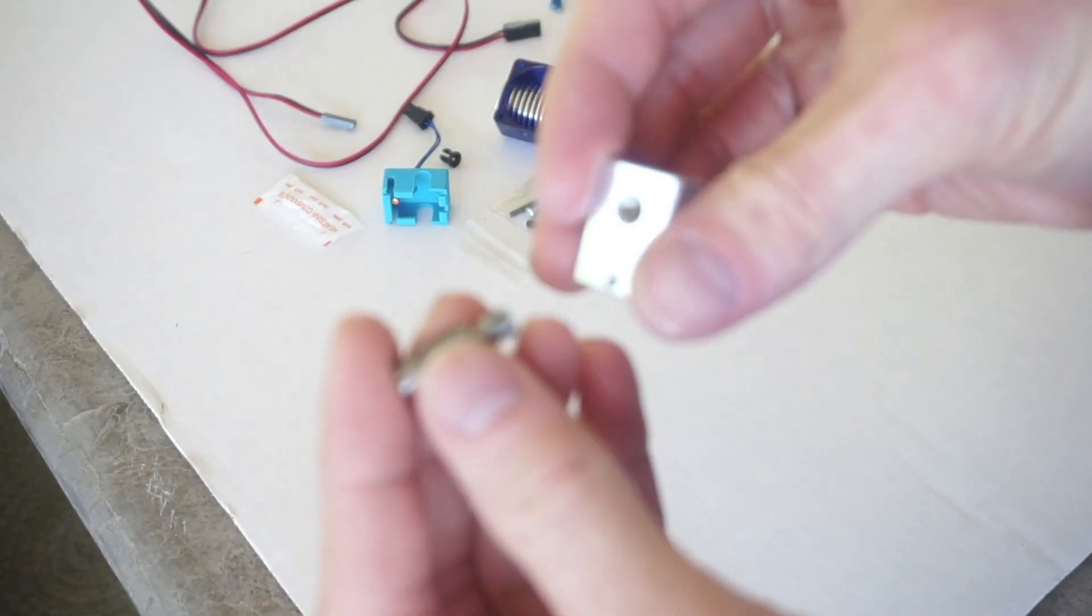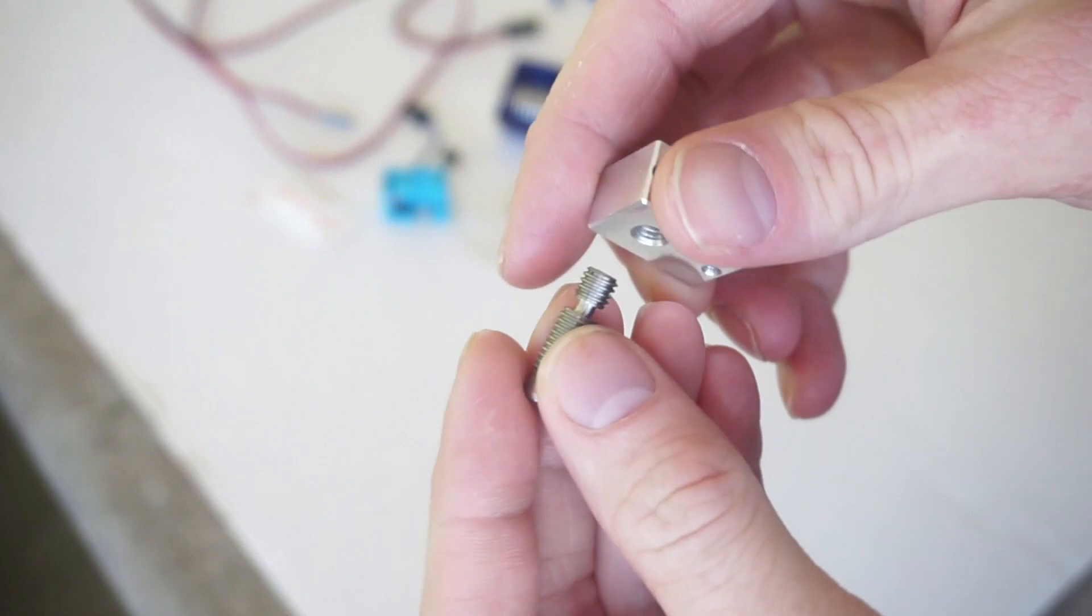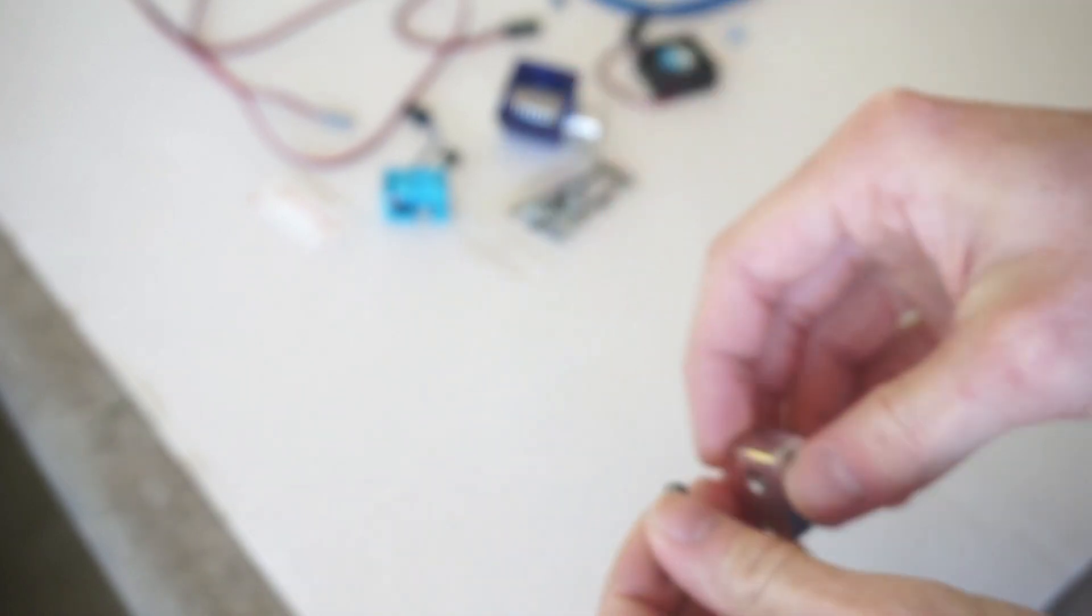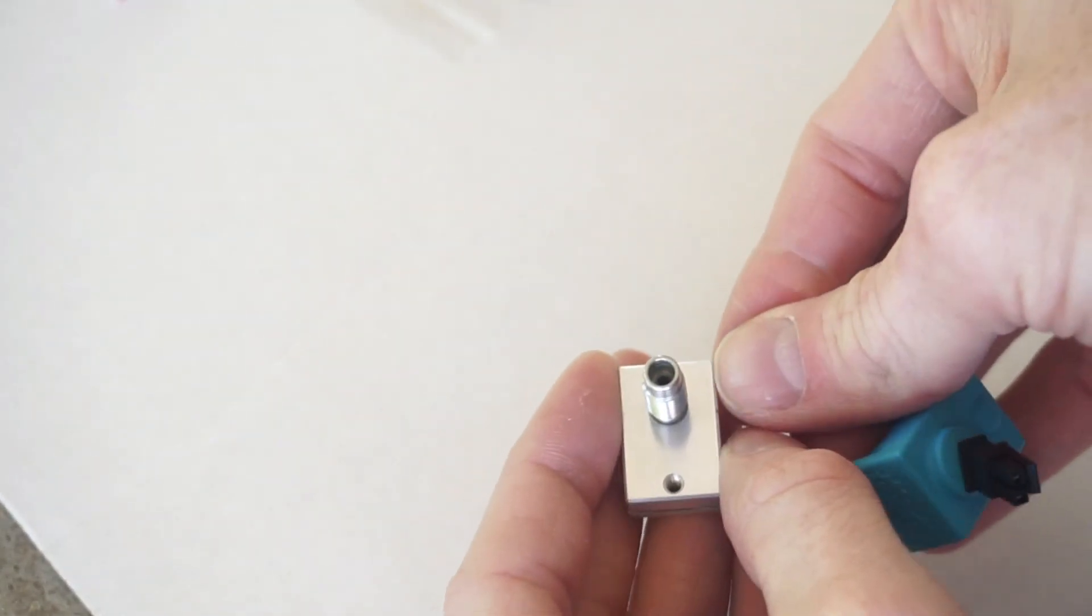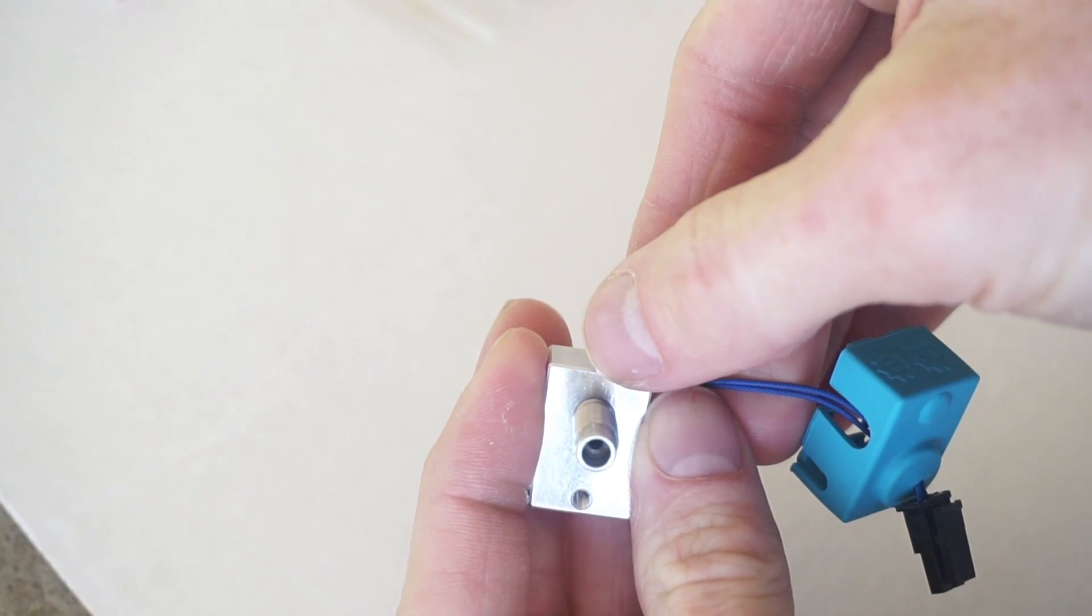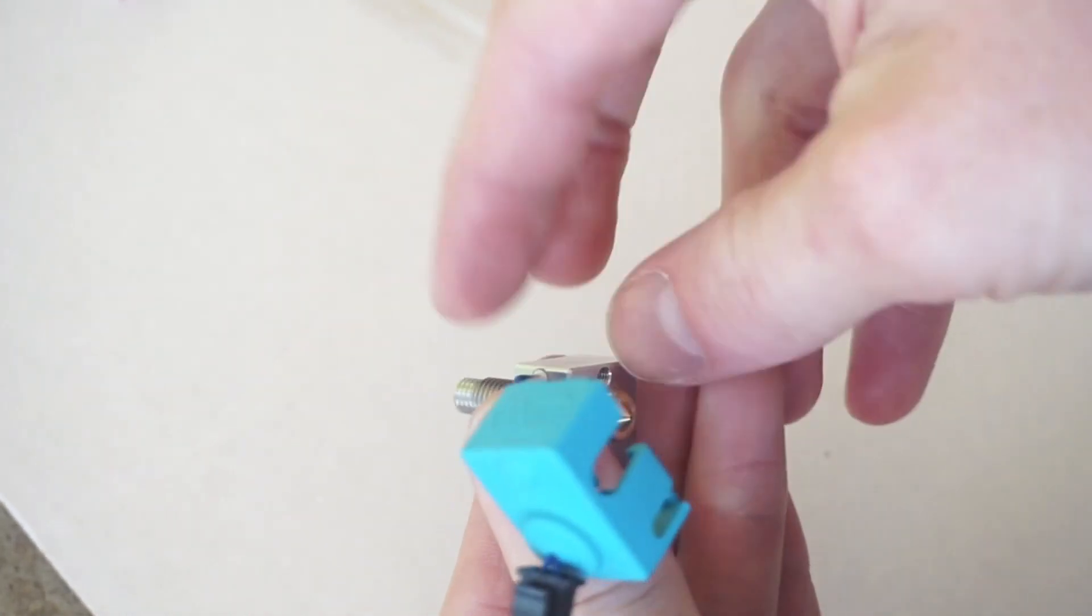Next we're going to screw the heat break to the other side so it's up against the bottom piece of it. So next we'll attach the sensor to the hotend. We're going to slide this piece into here like this. Then I get a screw and fix it in place right here.